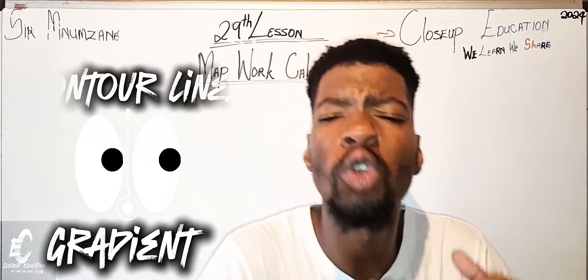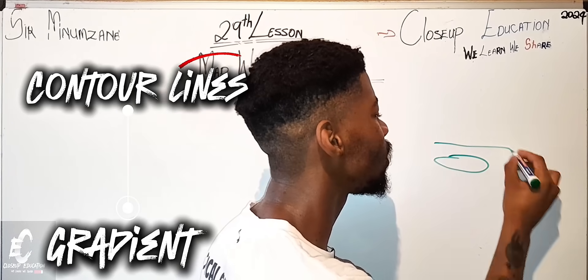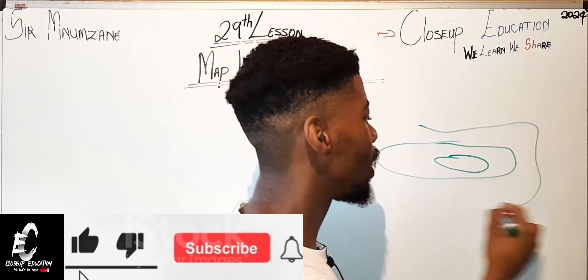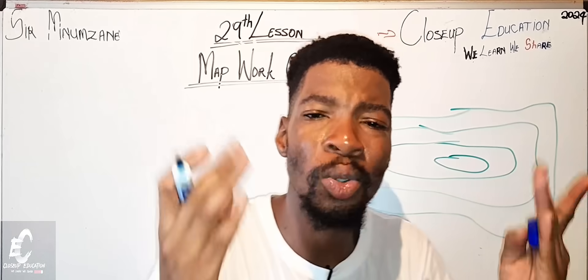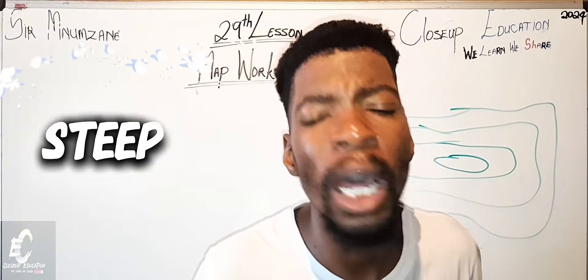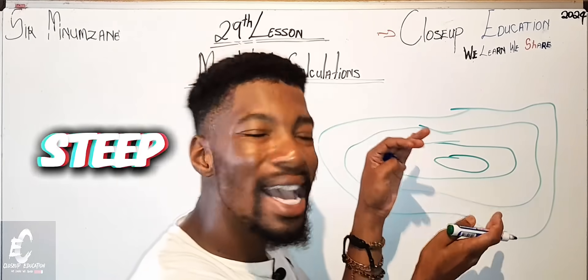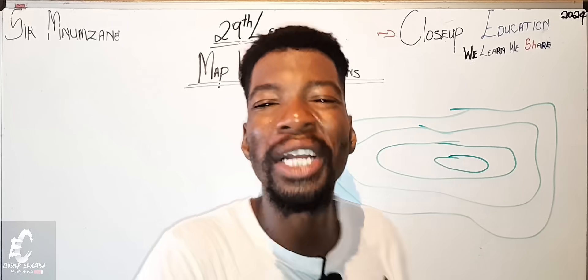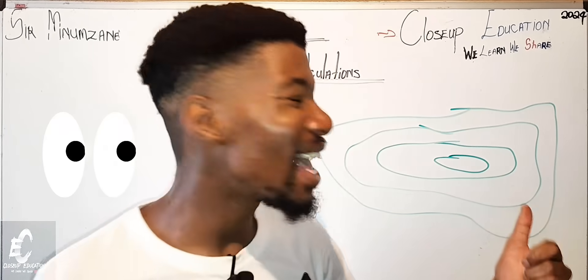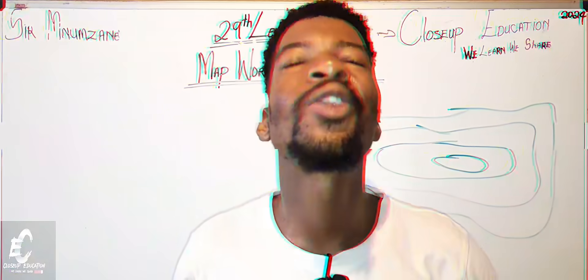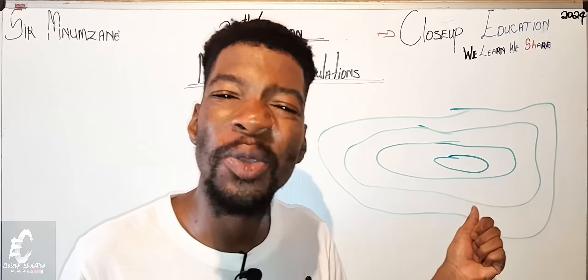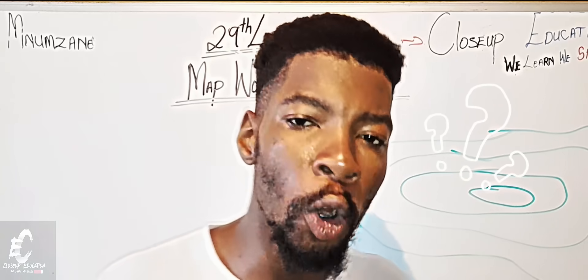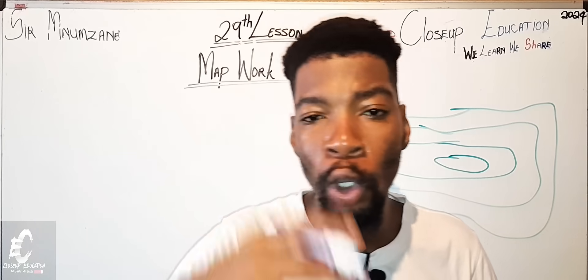Let's start by understanding gradient, which we can understand by looking at the contour lines. Let's draw some contour lines here. Looking at these contour lines, we can start to understand that maybe this area is very steep, because the contour lines are closely packed together. In geography, they might ask you to draw a cross-section of that particular area.